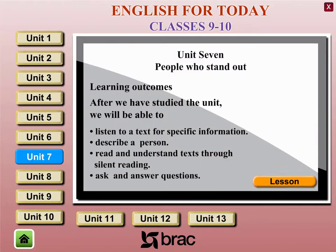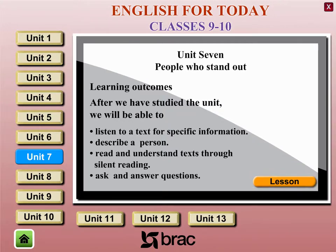Unit 7: People who stand out. Learning Outcomes. After we have studied the unit, we will be able to listen to a text for specific information, describe a person, read and understand text through silent reading, and ask and answer questions.